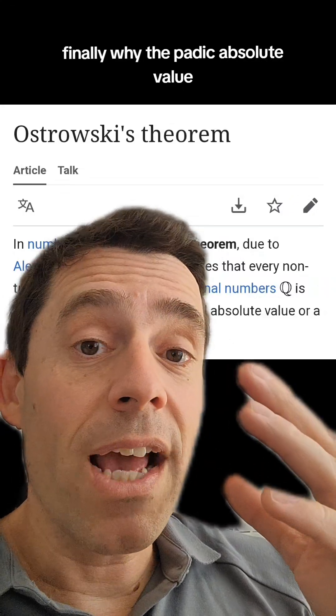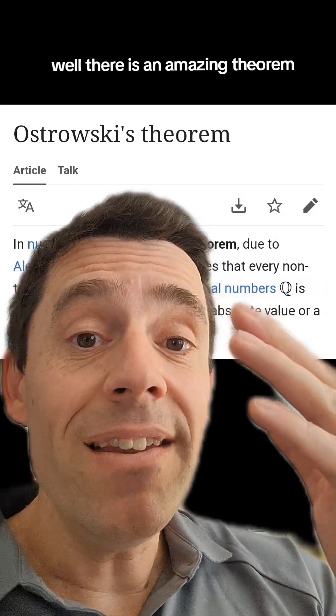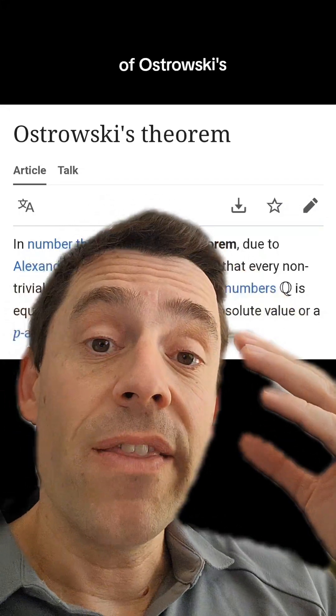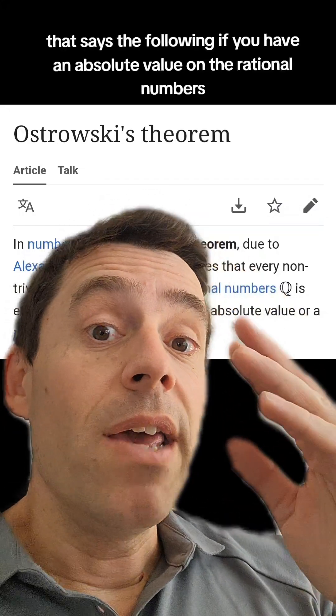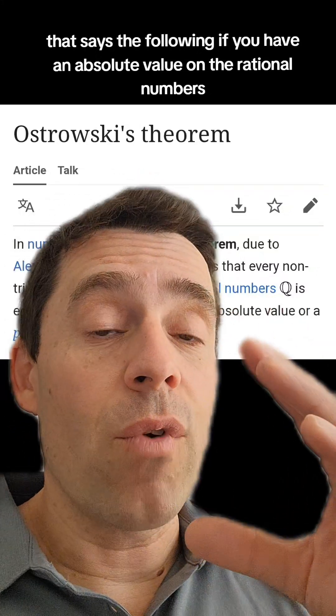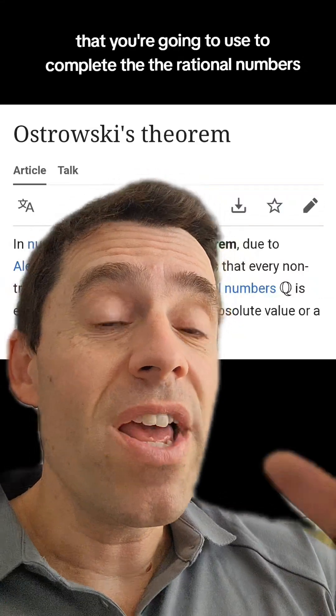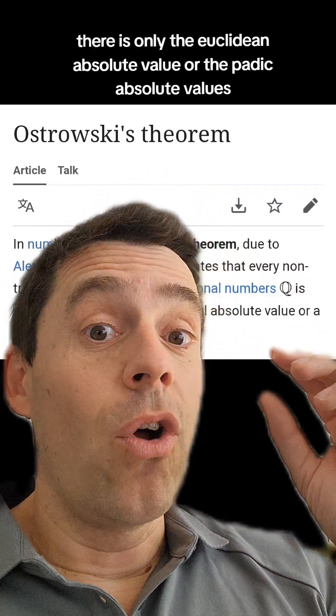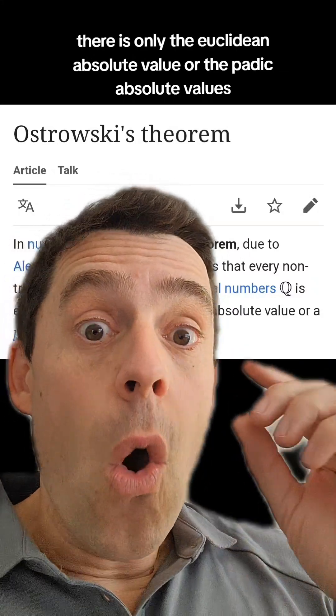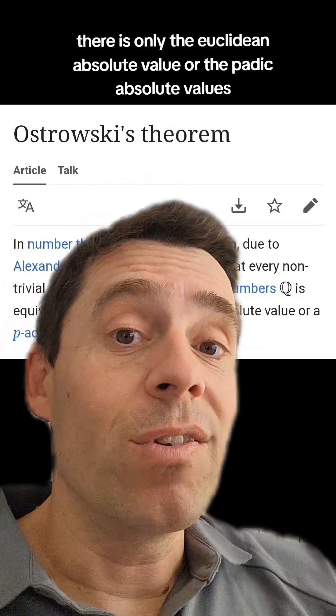Finally, why the P-adic absolute value? Well, there is an amazing theorem of Ostrowski's that says the following. If you have an absolute value on the rational numbers that you're going to use to complete the rational numbers, then up to equivalent, there is only the Euclidean absolute value or the P-adic absolute values.